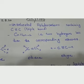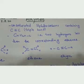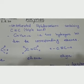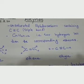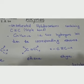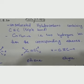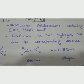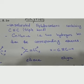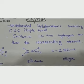The general formula of alkynes is CnH2n-2. The hydrogen count is minus 2 compared to the corresponding alkanes.